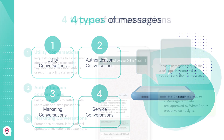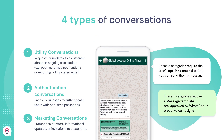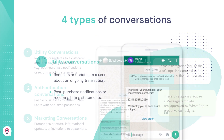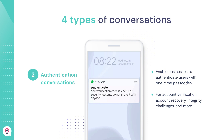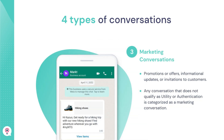Business-initiated has been unbundled into three new categories. One is utility conversations, like post-purchase notifications and recurring billing statements. Then authentication conversations — for example, messages that help with account verification, account recovery, integrity challenges, etc. And marketing conversations, which include promotions, updates, or invitations for customers to respond or take action.